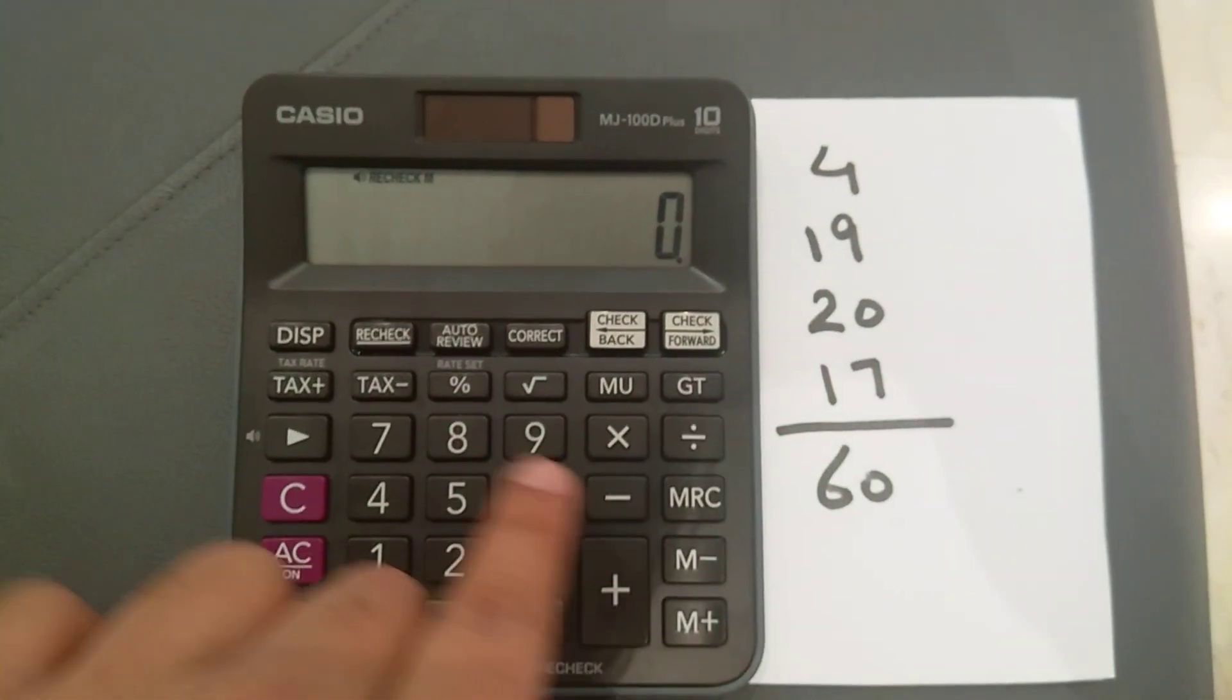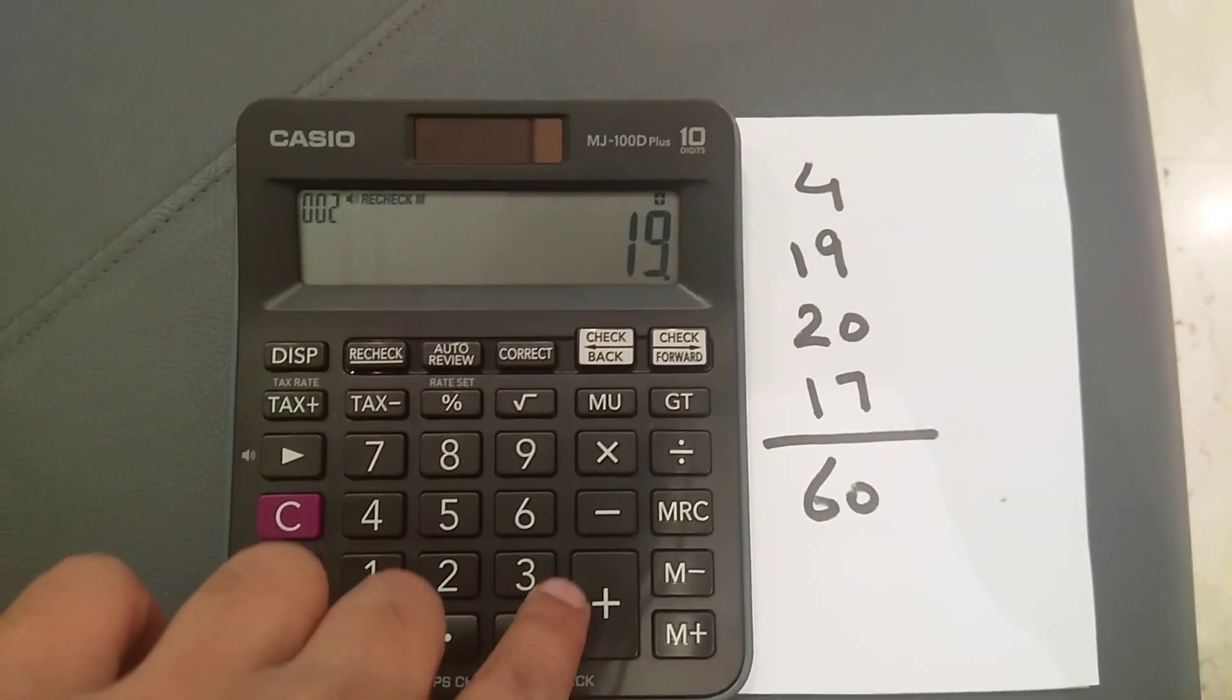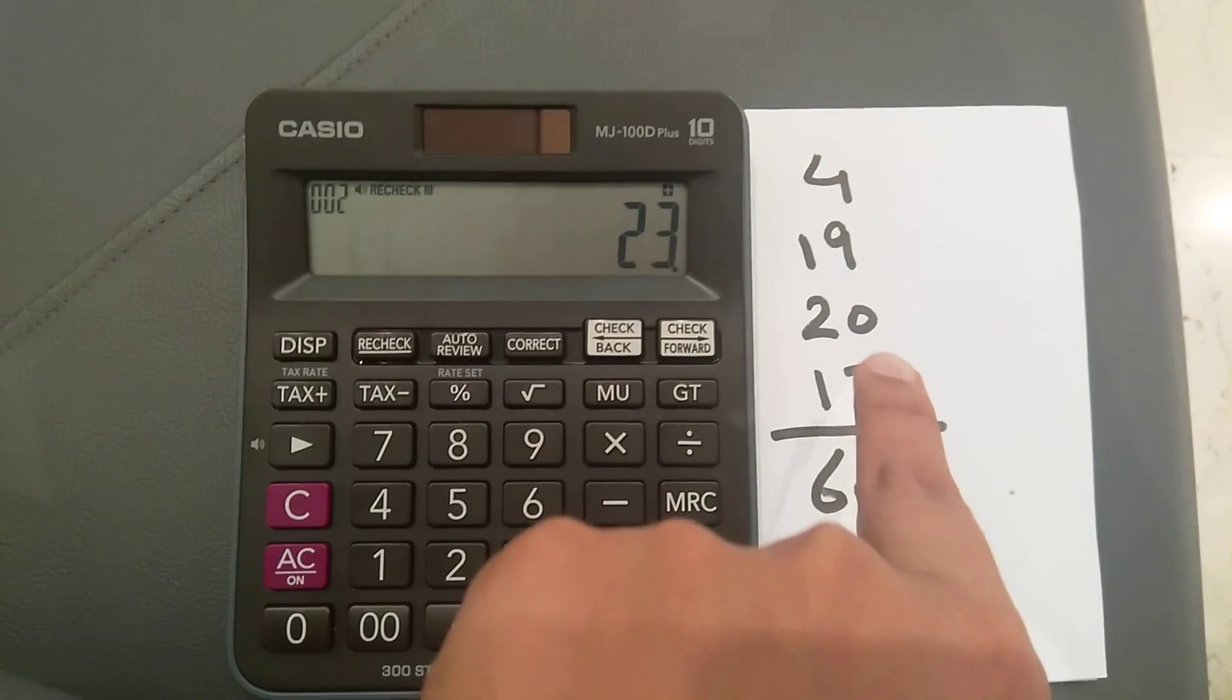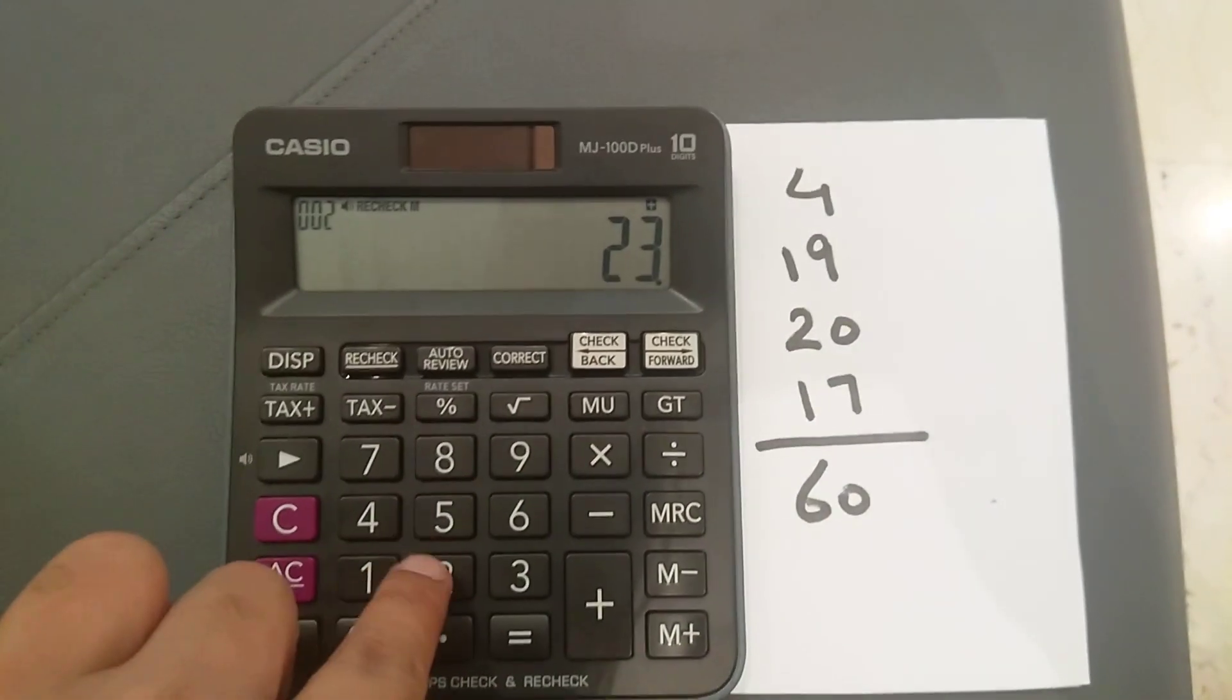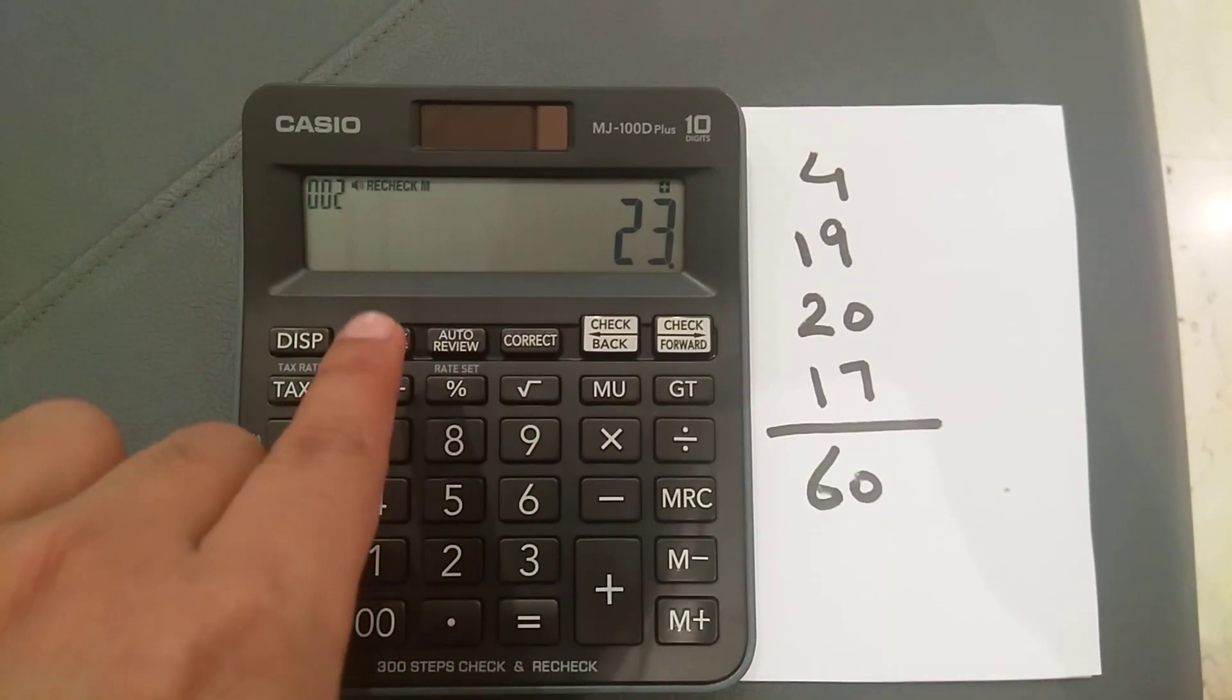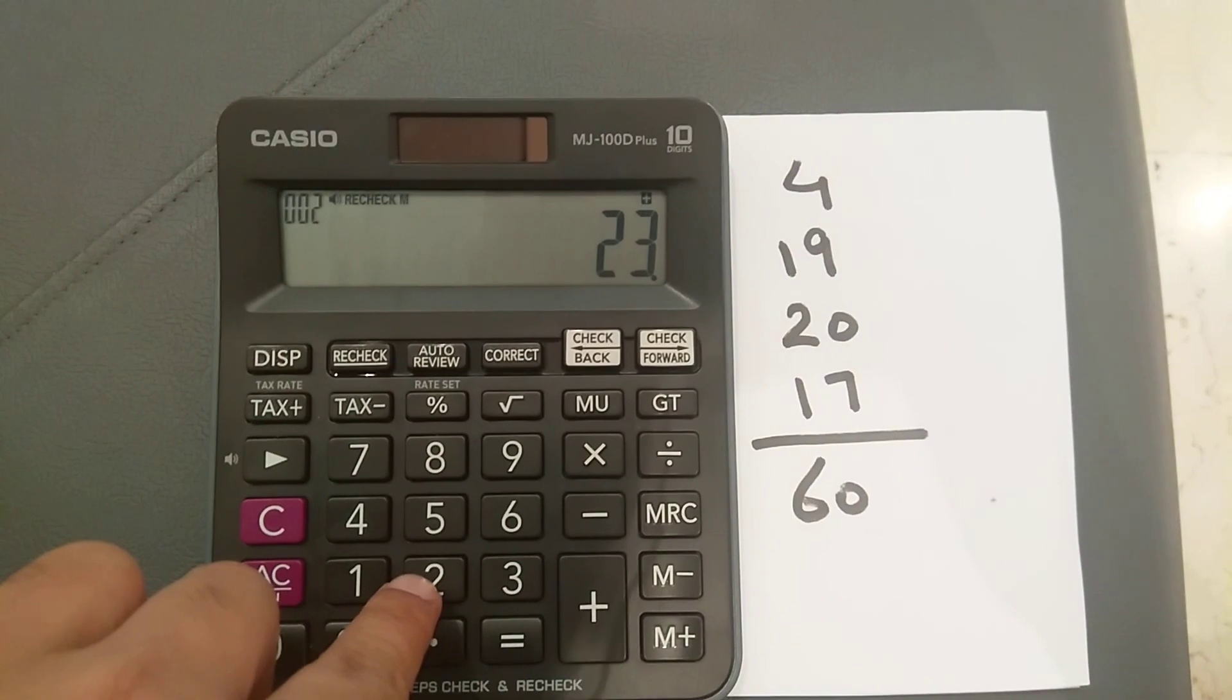Then I will do the same calculations again: 4 plus 19 plus... now instead of 20, if I put mistakenly 23 or 24, you will see a beep in the calculator. Let's say instead of 20, I will put 21. You see here.